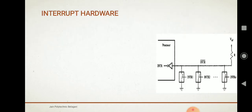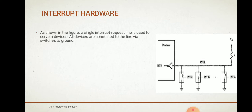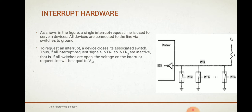First, let us look at what interrupt hardware is. As you can see in the diagram, there is an example of interrupt hardware consisting of Interrupt 1, Interrupt 2, and a number of interrupts. A single interrupt request line is used to serve all devices. All devices are connected to the line while switches go to ground. When all interrupt request signals INTR1 to INTRn are inactive, meaning all switches are open, the voltage on the interrupt request line will be equal to VDD.